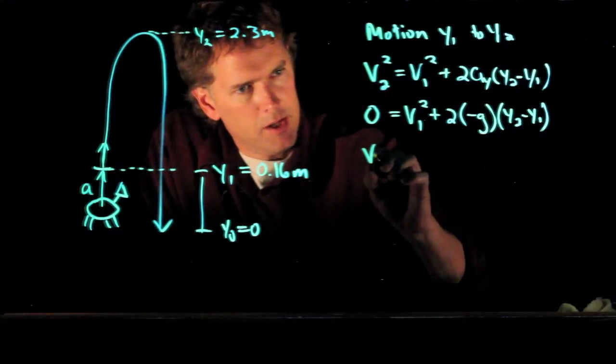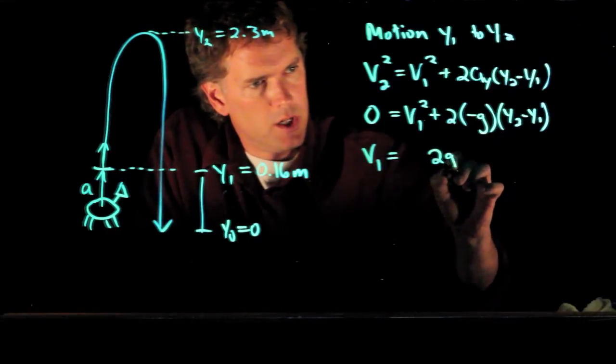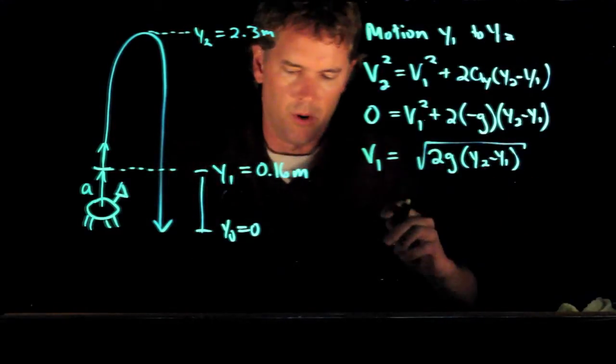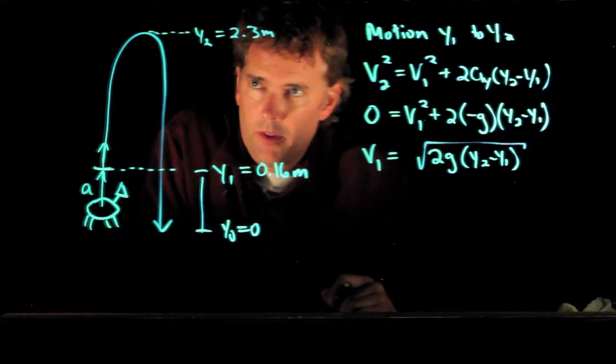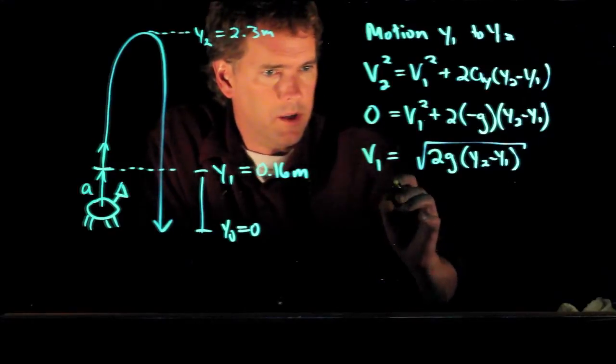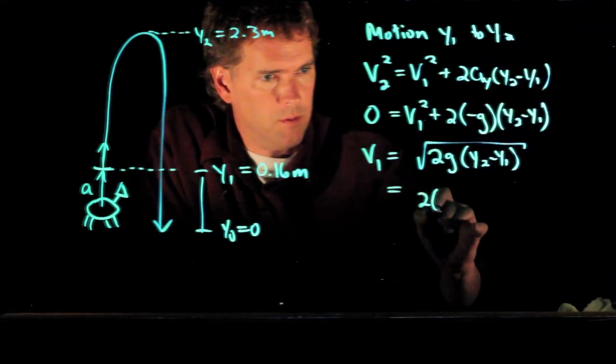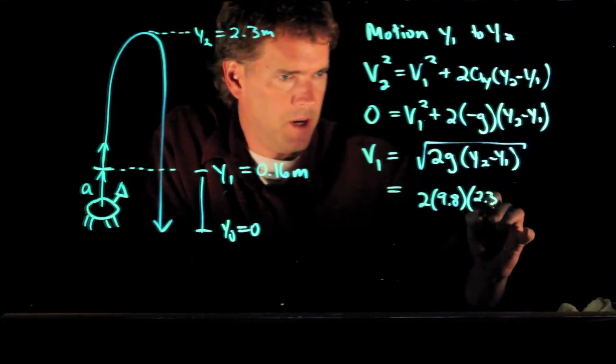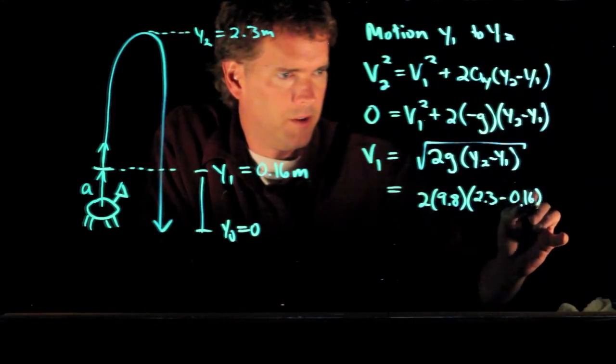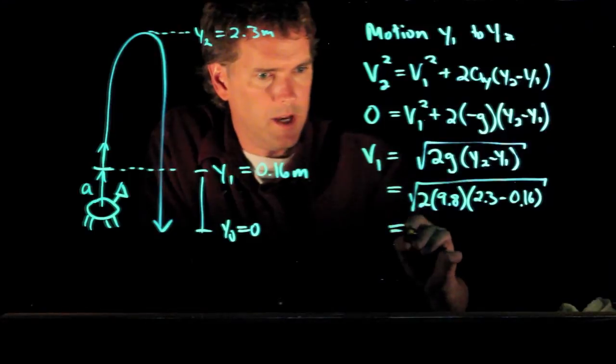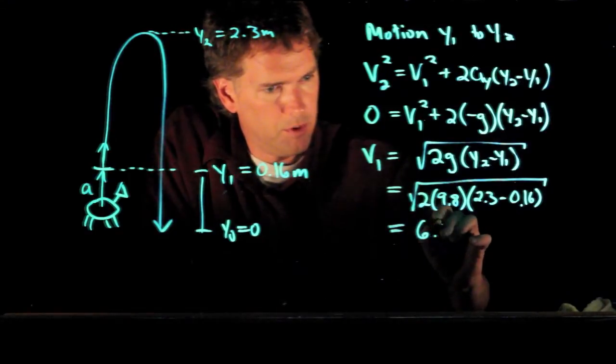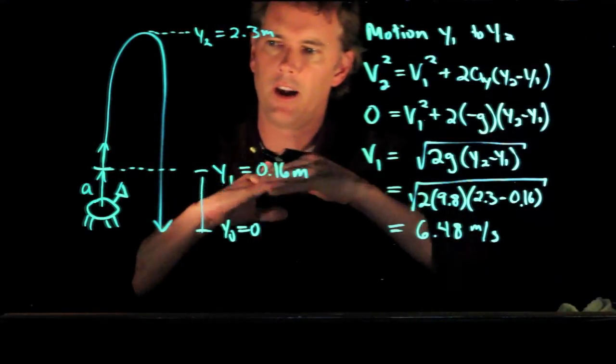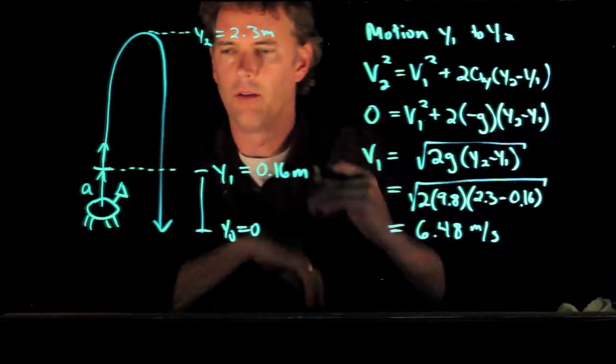So we have v1 = √(2g(y2 - y1)). Okay, and if we plug in some of the numbers that we just gave you here, what do you get? Well we have 2 times 9.8—I'm not going to write down all the units, these are all SI units—we have 2.3 and we're subtracting 0.16, and we take the square root of all that. And if we do that you get 6.48 meters per second. Okay, so this is how fast they're going after their legs have pushed them upwards.